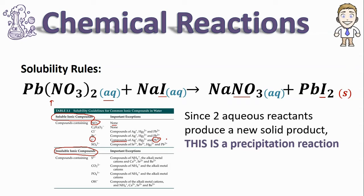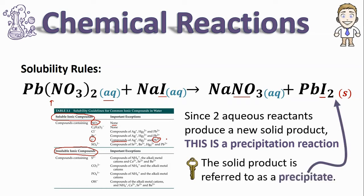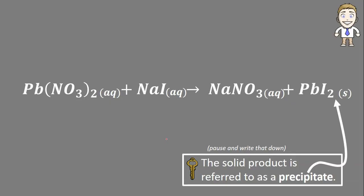Now I see I've got two aqueous reactants there and they're producing a new solid product, so this fits the definition of a precipitation reaction. One final label here is that this solid product has a name—once you identify it, that PbI2 is henceforth referred to as a precipitate.